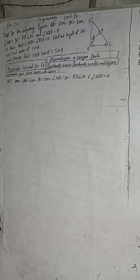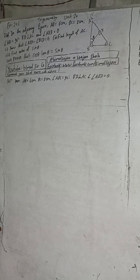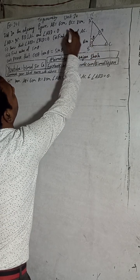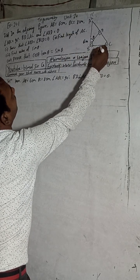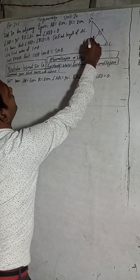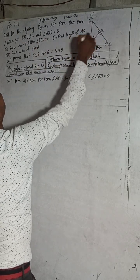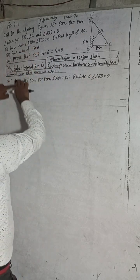The question is 7A. If you are watching this video for the first time, comment your school name with address — I want to know from where you are watching. Now in the adjoining figure, AB is equal to 6cm, BC is equal to 8cm, angle ABC is 90 degrees, BD is perpendicular to AC, and angle ABD is equal to theta.